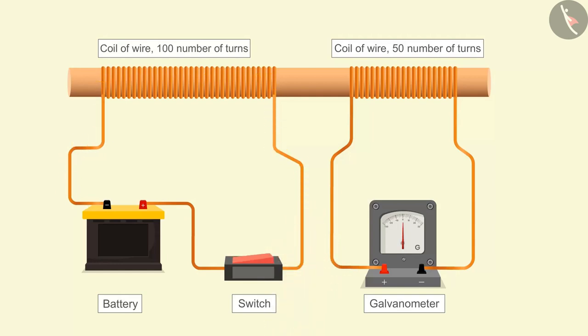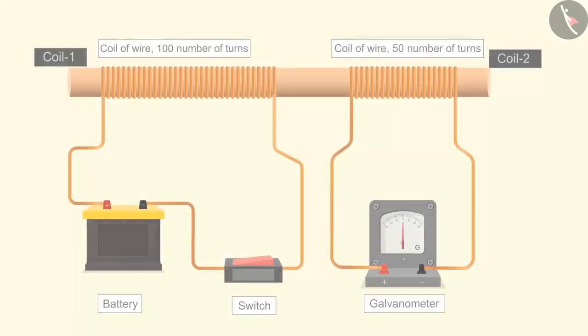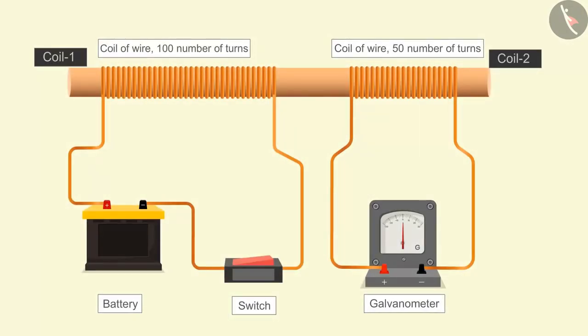If we put off the switch then as well a deflection can be seen but in the opposite direction. If the direction of the current in coil 1 is reversed and the switch is on then as well a deflection can be seen in the needle of the galvanometer but in the opposite direction.